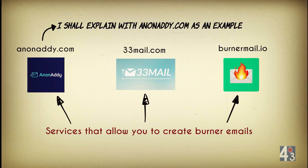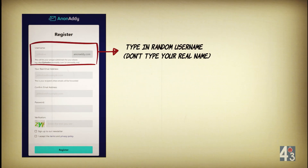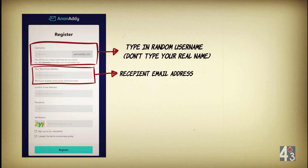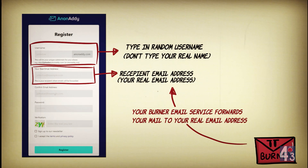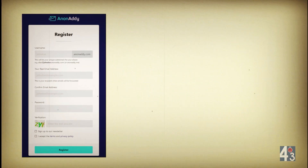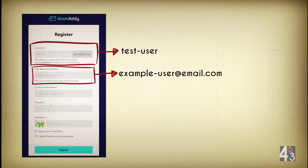To explain this further, I'll use the example of anonaddy.com. You sign up or register to the service with a random username — a name not in any way tied to your real name. When you register, it also asks you for a recipient email address, which is your real personal email address where you'd like to receive forwarded emails. Let's assume you've chosen the username 'testuser' and your real email address is exampleuser@email.com.